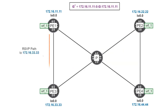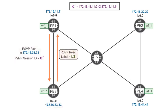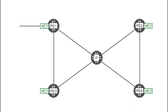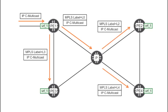The remaining sub-LSP goes to PE3 and follows a different path due to the IGP metrics. So when PE1 receives a C multicast packet from CE1, it sends one copy down to P and one copy down to PE3.